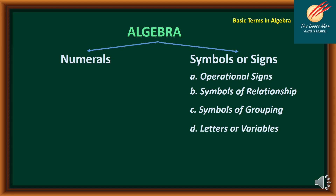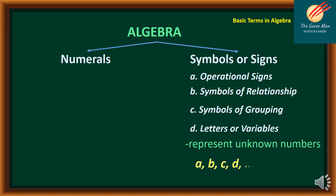Letters or variables actually represent unknown numbers. For example, we can use the alphabets A, B, C through X, Y, and Z. We may use small letters or big letters to represent unknown numbers.